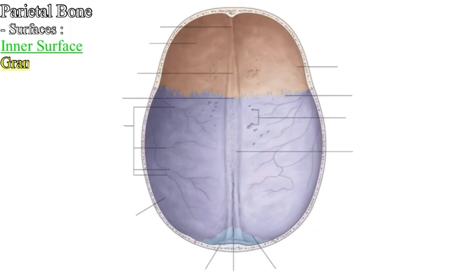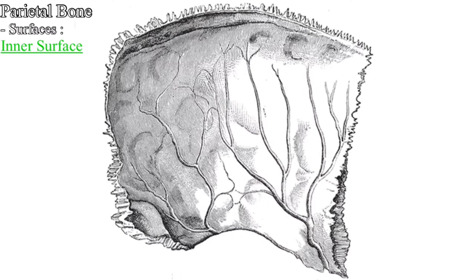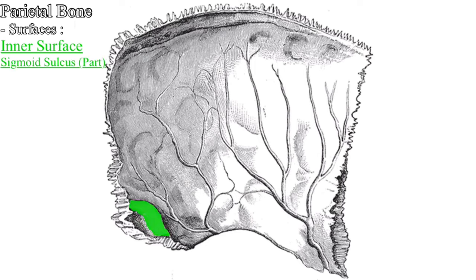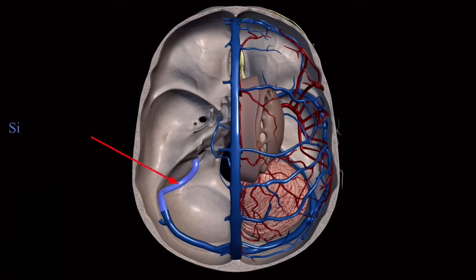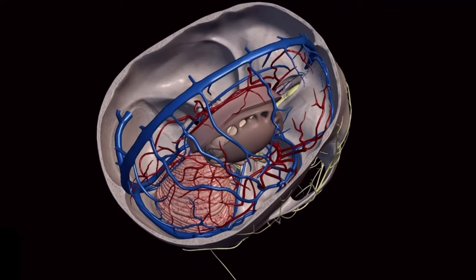Next are the granular pits. On either side of the sagittal sulcus are present pits called granular pits, produced by the arachnoid granulations. Number five is part of the sigmoid sulcus. Close to the posterior inferior angle a curved groove is present, which is part of the sigmoid sulcus. The sigmoid sinus is present in the sigmoid sulcus, and this part of the sigmoid sulcus is present on the inner surface of the parietal bone.